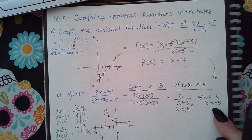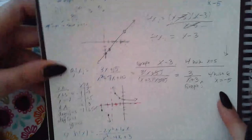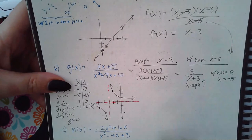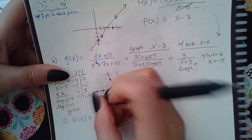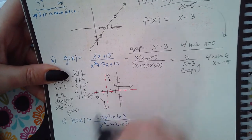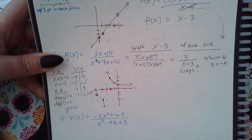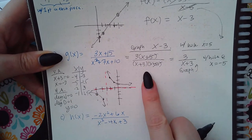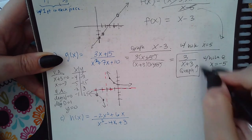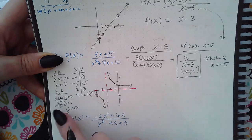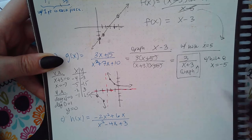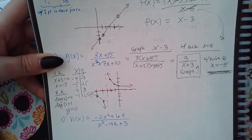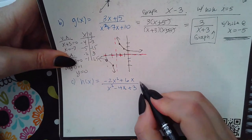Don't forget to place the hole. The hole is at x equals negative 5, so I grab the hole icon and place it right there where x equals negative 5 and it touches the graph. To summarize: reduce the function first, then use the reduced version for asymptotes and the chart, graph completely, but mark the hole at the end.